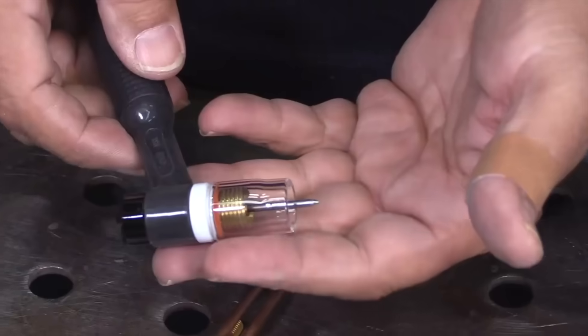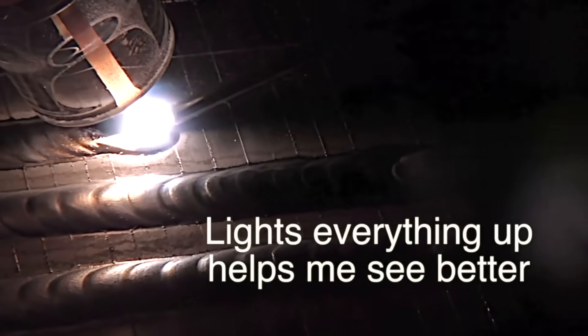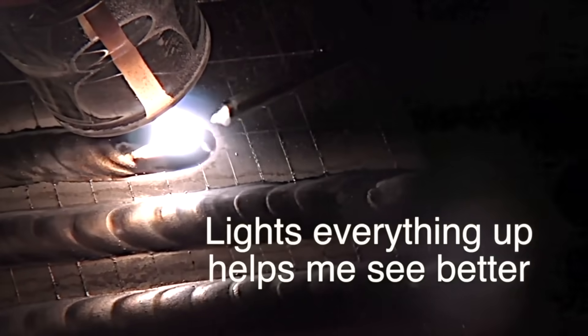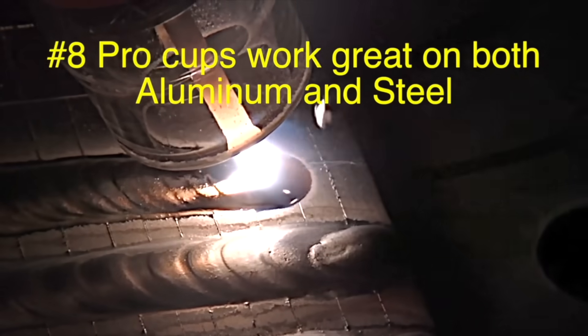The number eight clear cup is good for AC and DC. This is a little plate with a bead on plate here with scribed lines about an eighth of an inch apart just so you can see the detail. See how well this cup lights things up. It really helps.